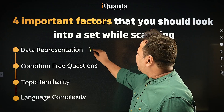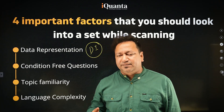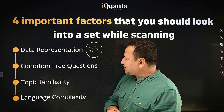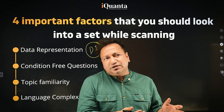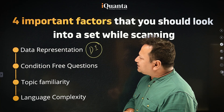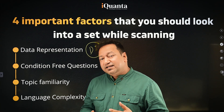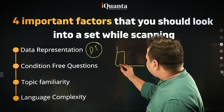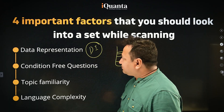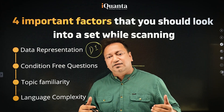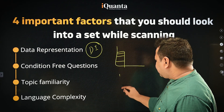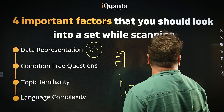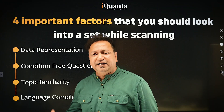Data representation is all about the DI part, not LR. Data can be represented in different forms: pie chart, bar chart, line graph, column graphs, stacked graphs, and more. Whatever is familiar to you — or what you deal with in your daily job or college — you should attempt first. Pie charts are generally pretty easy. Stacked column graphs, where a column has multiple sub-columns, can be complicated. Sets where multiple kinds of representation are combined — like a column graph where every column has its own pie chart — you don't want to do those.